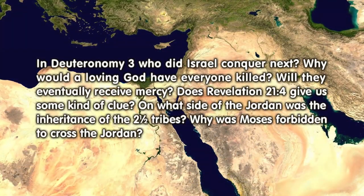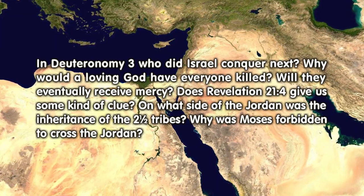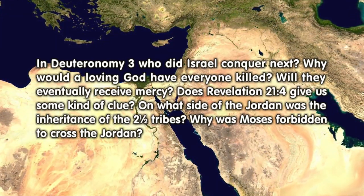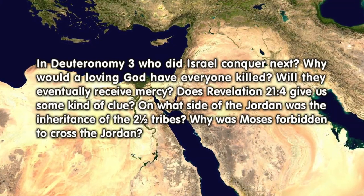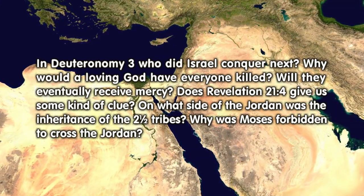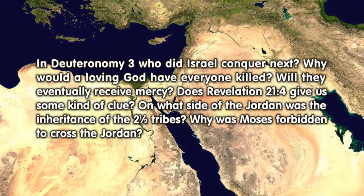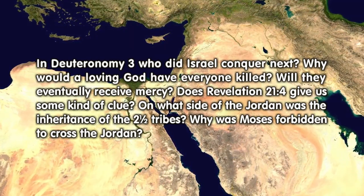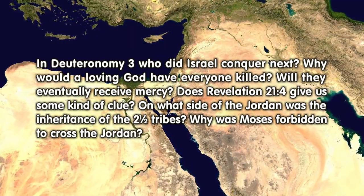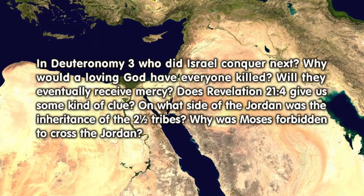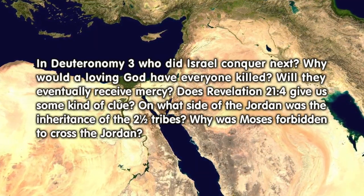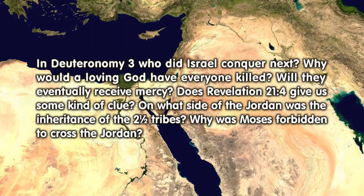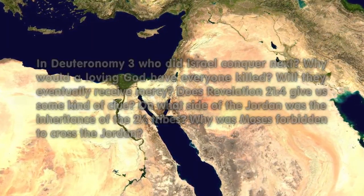In Deuteronomy 3, who did Israel conquer next? Why would a loving God have everyone killed? Will they eventually receive mercy? Does Revelation 21, verse 4 give us some kind of clue? On what side of the Jordan was the inheritance of the two and a half tribes? Why was Moses forbidden to cross the Jordan?